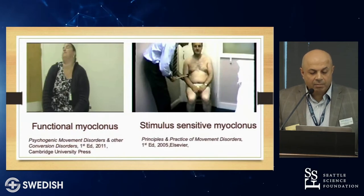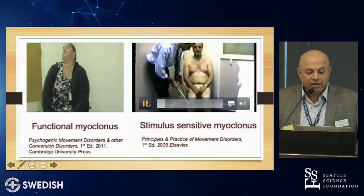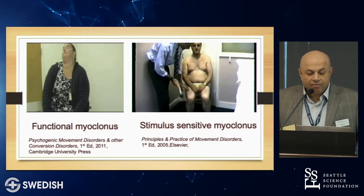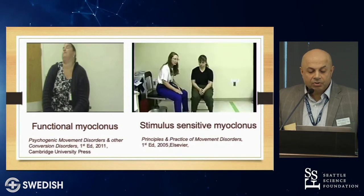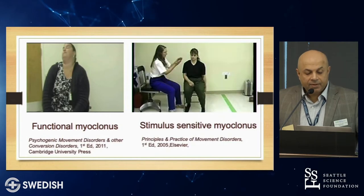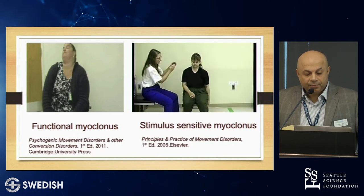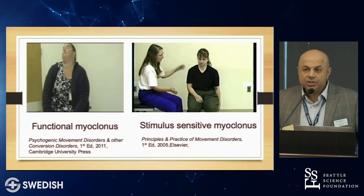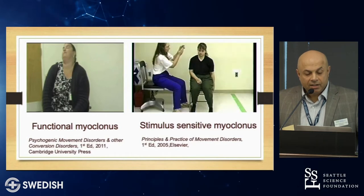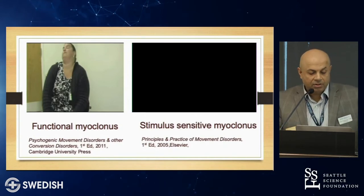This is an example of startle myoclonus. This person has a gene that causes excessive startle — it's just a mild truncal flexion. This woman has a gene causing myoclonus and startle but is on clonazepam, so it's partially treated. The movements are very subtle, continuous, persistent, do not attenuate — not dramatic.